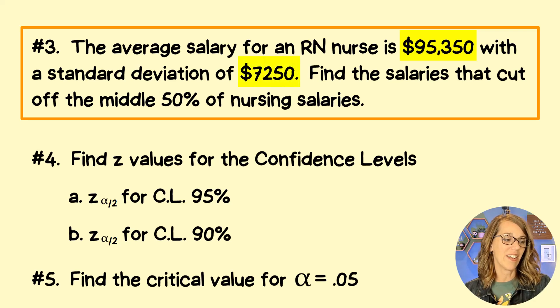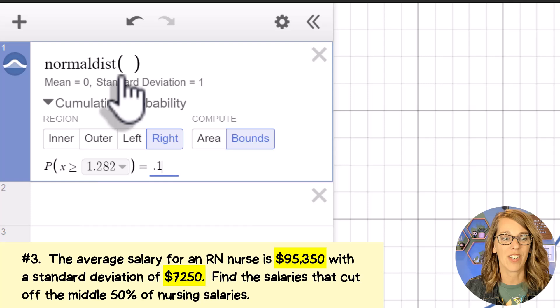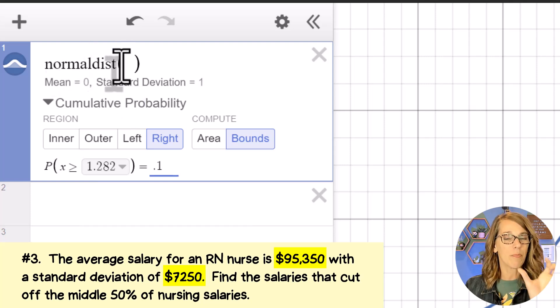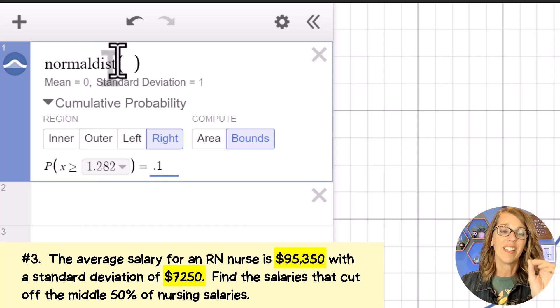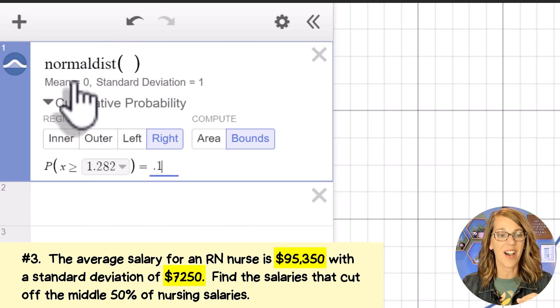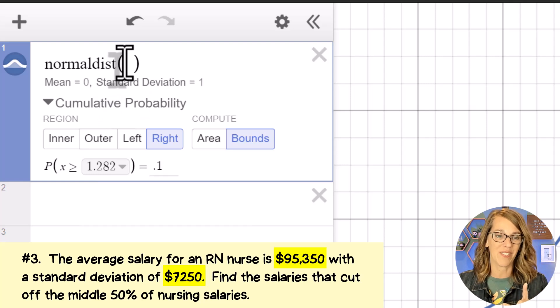Find the salaries that cut off the middle 50%. So it's similar to the one that we just did, but I need to change the mean and standard deviation. This normal dist has parentheses next to it. Right now, it's understood to be 0,1. Mean, see that comma there? Standard deviation.